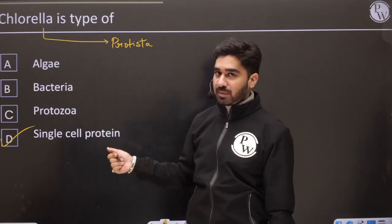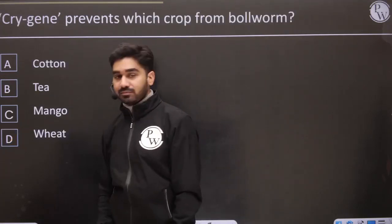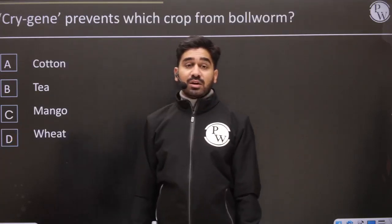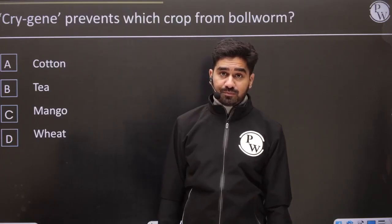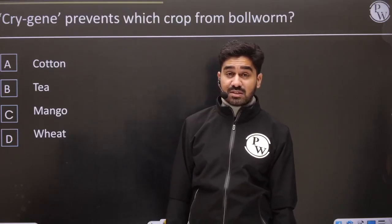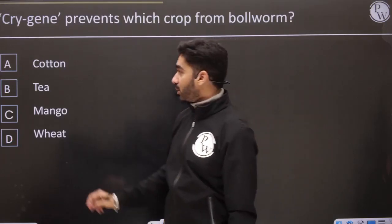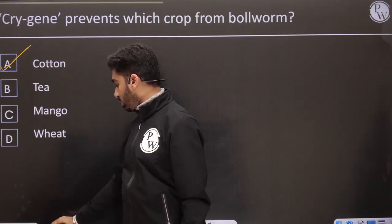Cry gene prevents which crop? The cry gene from Bacillus thuringiensis — what was it providing protection to? Yes — cotton.